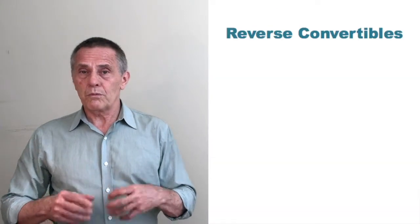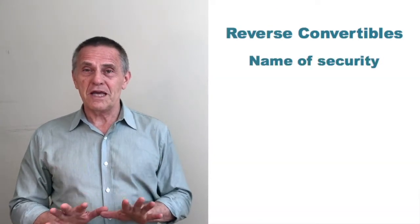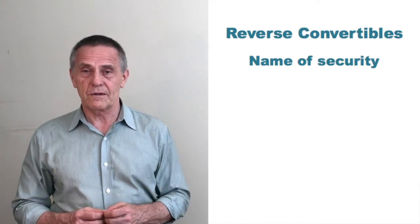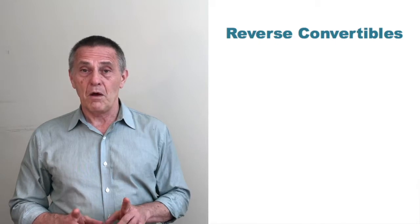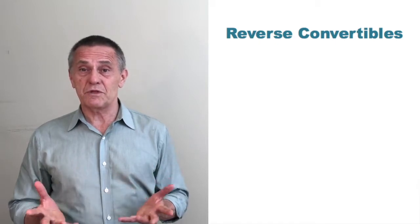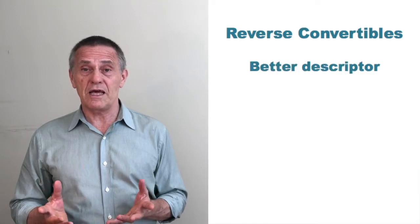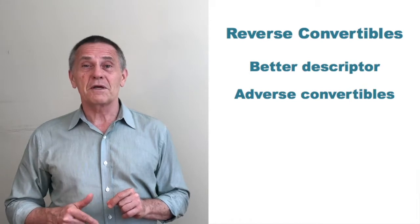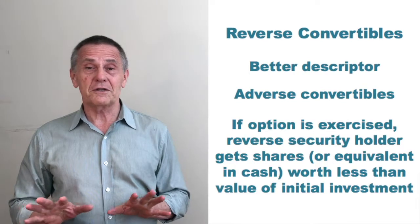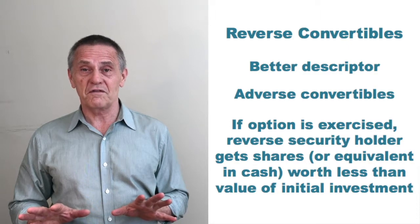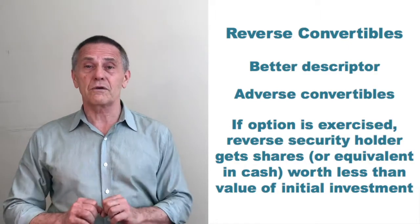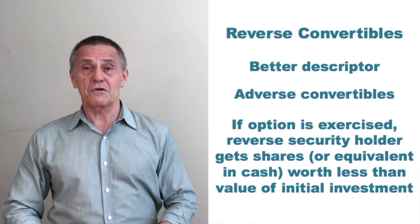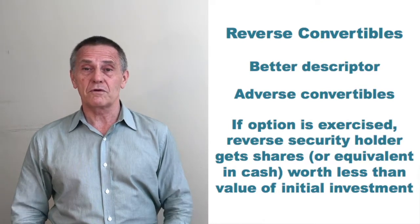One more point about the name of reverse convertibles: the name is not very descriptive, because the flow of the conversion isn't reversed. If reverse convertibles had a name that was actually a descriptor rather than just a name, they wouldn't be called reverse convertibles — they'd be called adverse convertibles. Because if the conversion actually occurs, it's clearly adverse to the interests of the investor, since they're getting stuck with shares, or again the equivalent value in cash, of depreciated assets whose value is likely well below the amount of their initial investment.